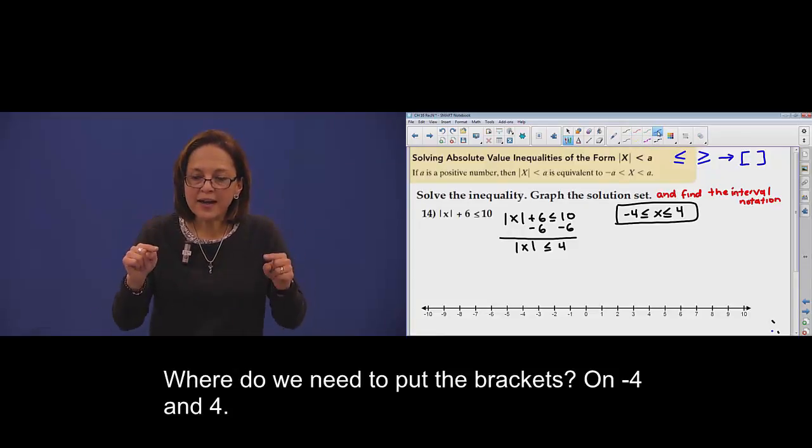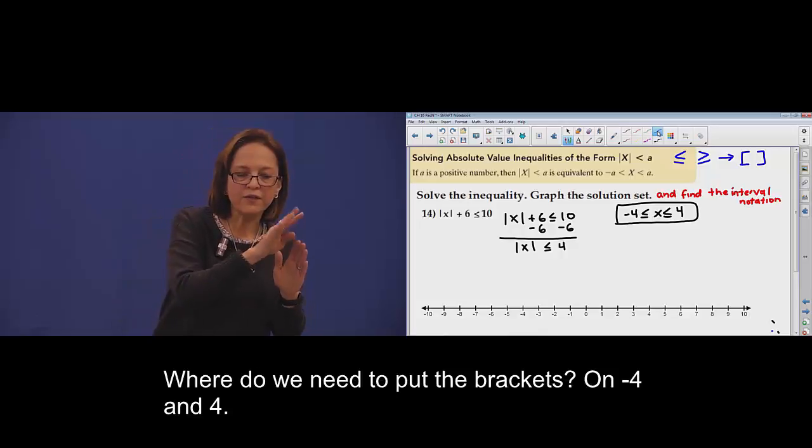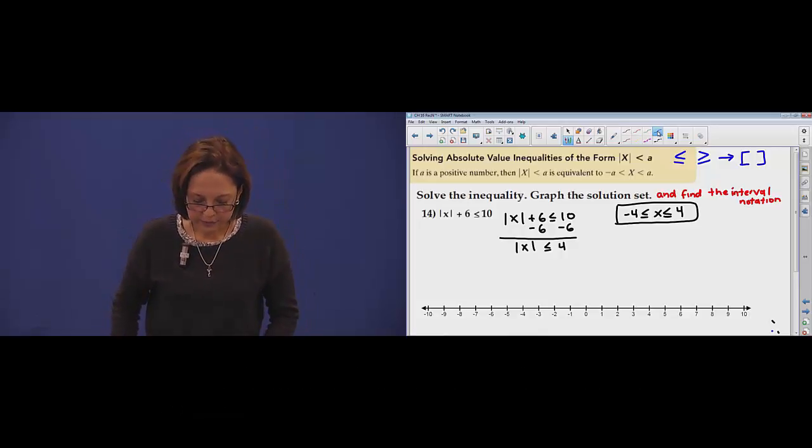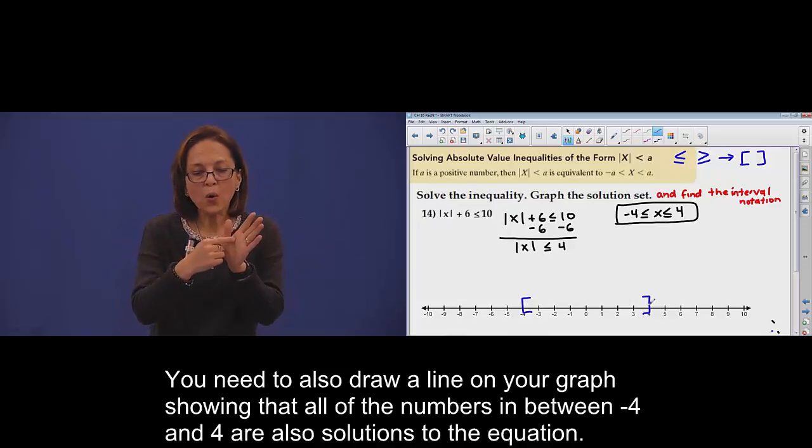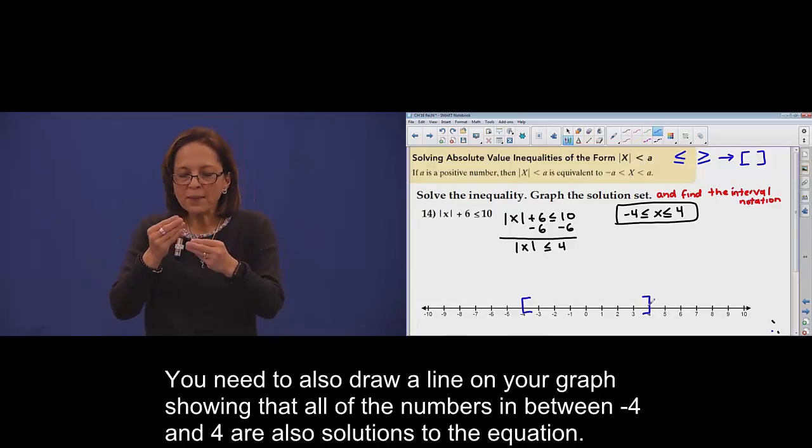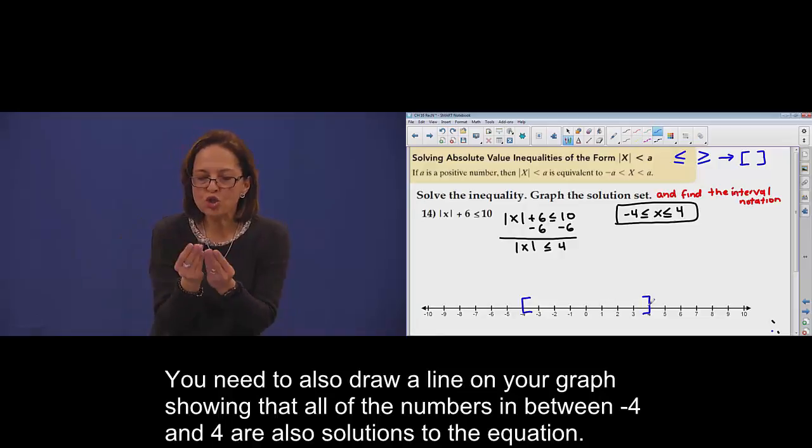Where are the brackets? On negative 4 and 4. But you have also to draw the line, showing that all the numbers in between are also solutions.